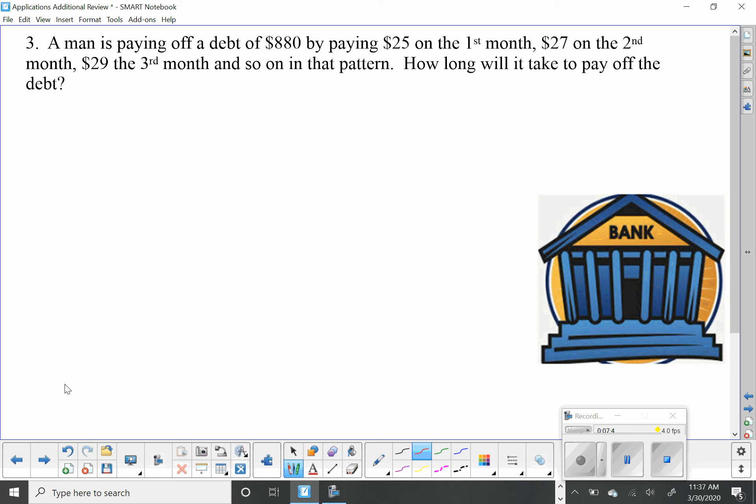Going on to the third one: A man is paying off a debt of $880 by paying $25 in the first month, $27 in the second month, $29 the third month, and so on in that pattern. How long will it take him to pay off the debt? I know that my s sub n, the total amount being paid off, is going to be $880. I also know that the first payment is $25. Then $27, $29, I'm going up by 2, so I'm adding, so it's arithmetic. And my common difference is $2 per month.